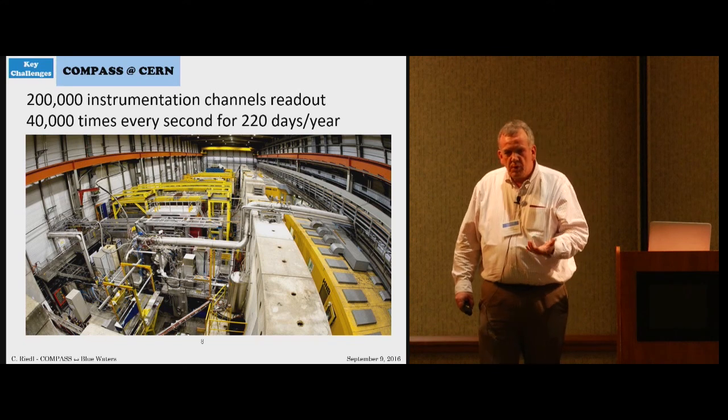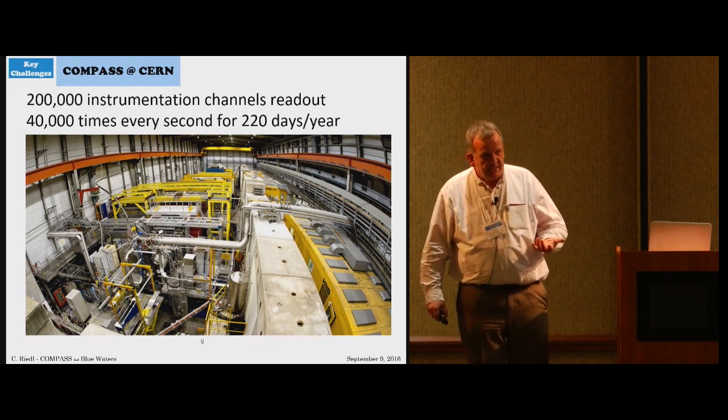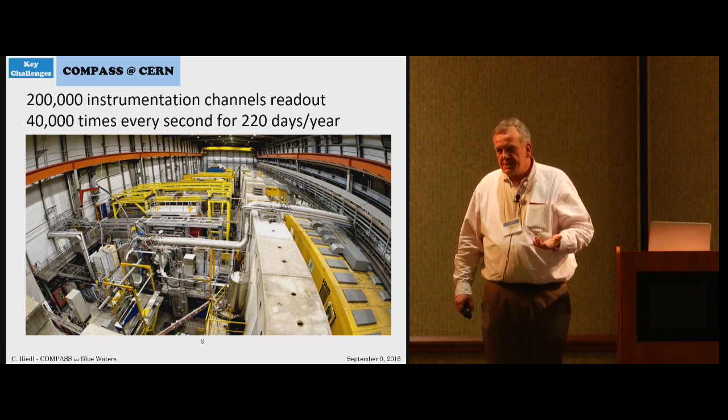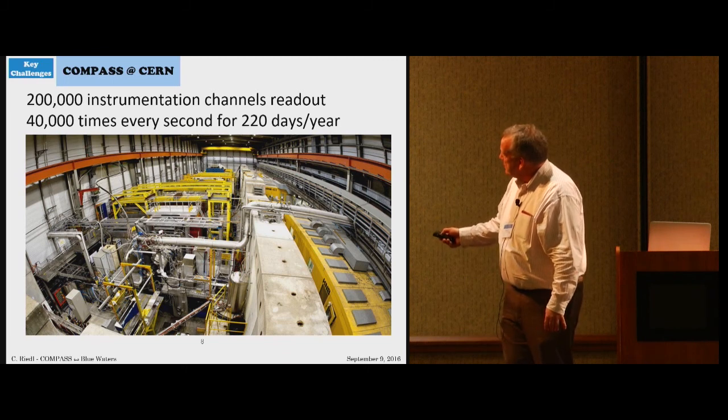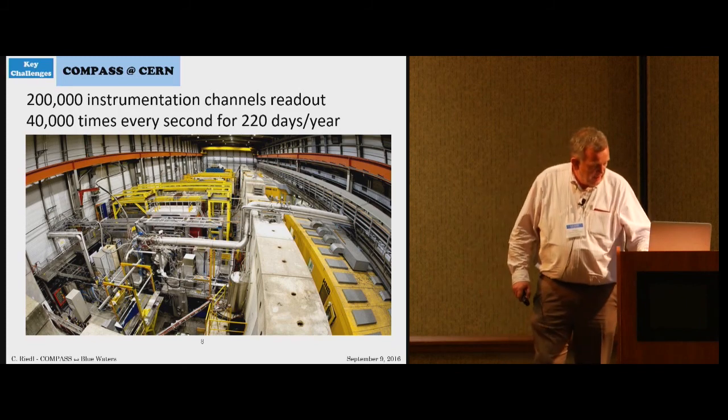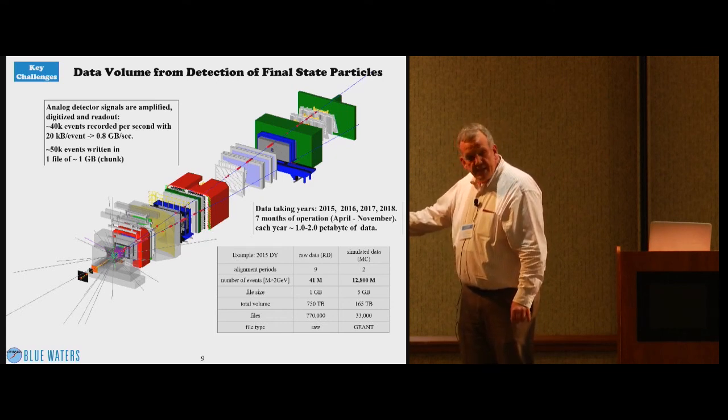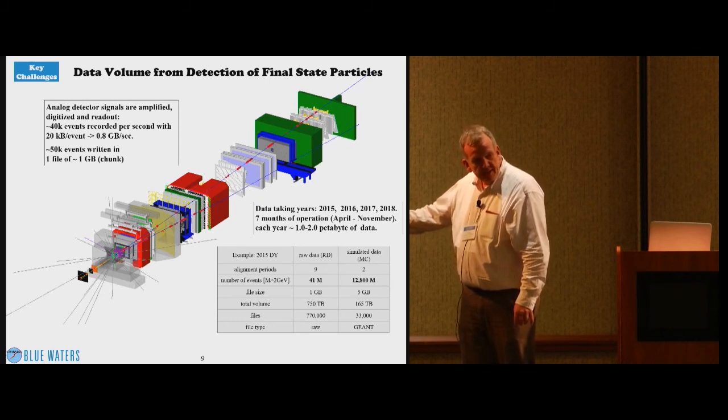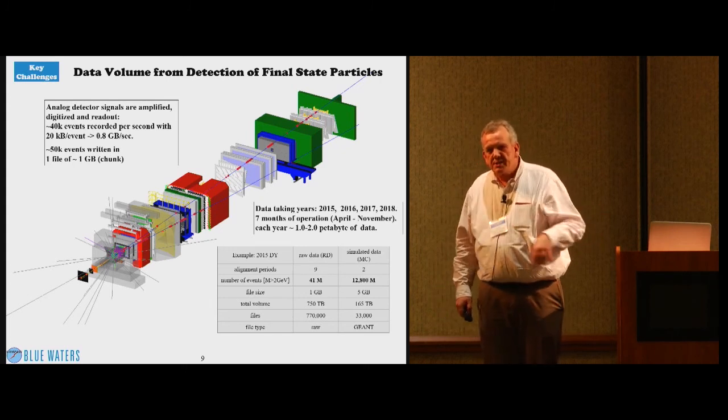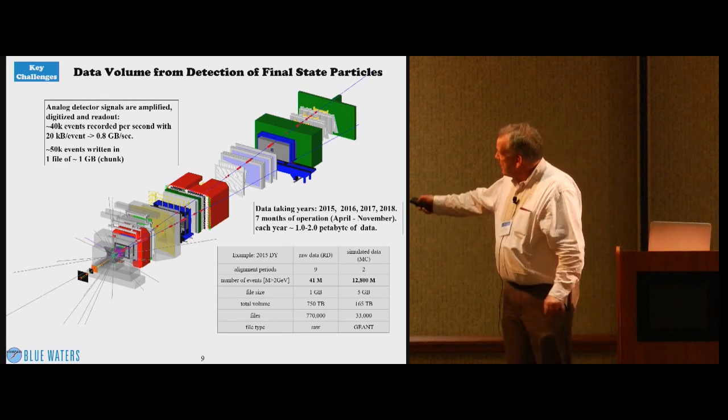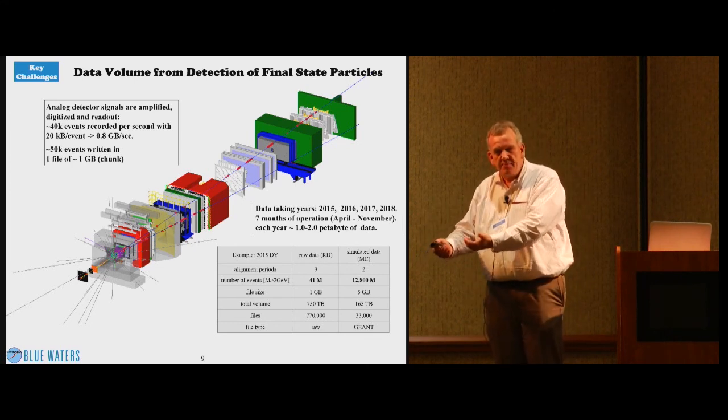Now, closer to the challenge where Blue Waters makes a really significant difference, this large spectrometer has a large number of instrumentation channels, about 200,000. These are read out 40,000 times per second. Some of them actually take several samples in one readout cycle. And this happens around the clock, 220 days every year. And that produces an enormous amount of data. So we have 40,000 events per second, 20 kilobytes per event. So this writes at about 800 megabytes per second to tape. We organize our data into files we call chunks of one gigabyte. So in a burst, we have a file roughly every second. And then this amounts to about one petabyte of raw data.